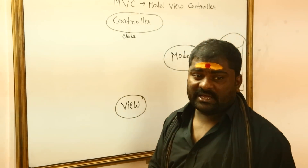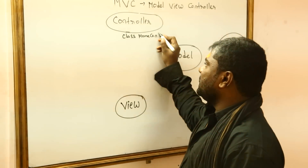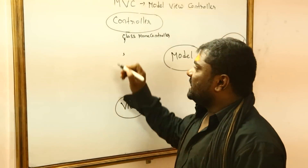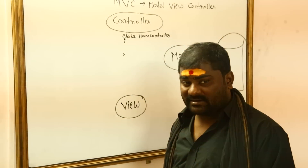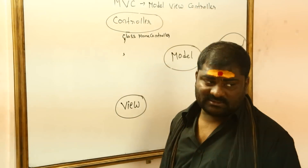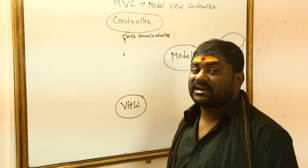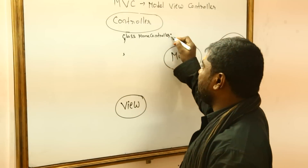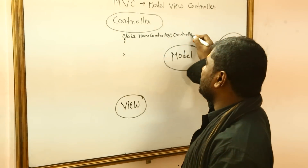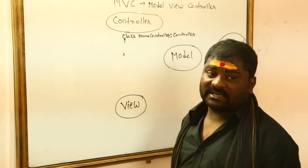Here I am declaring one class — the name of my class is HomeController. If this class is not inheriting from the Controller class, it is not a controller. Any class that is inheriting from the Controller class is called a controller. So I write: class HomeController inheriting from Controller. Now this class is called a controller.